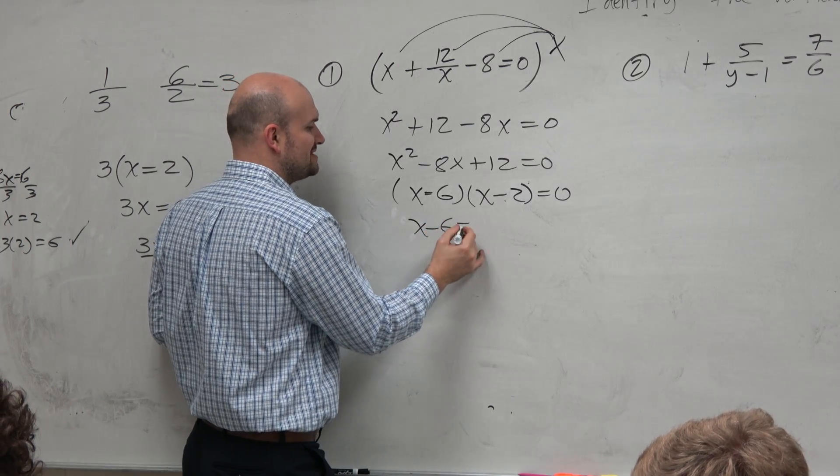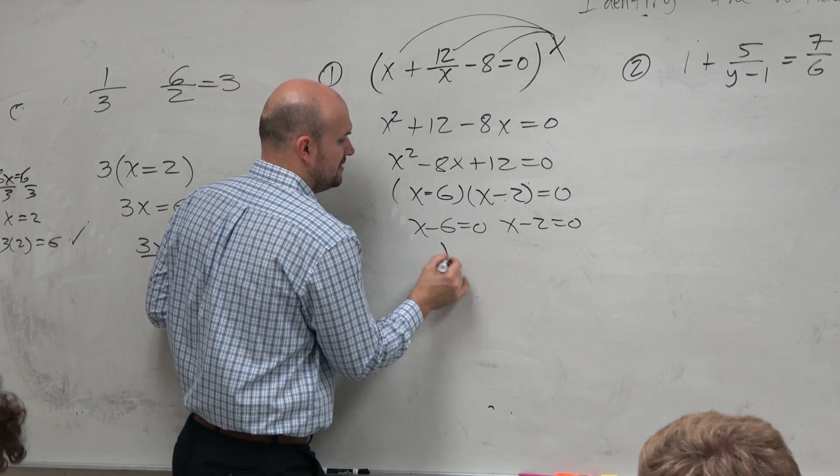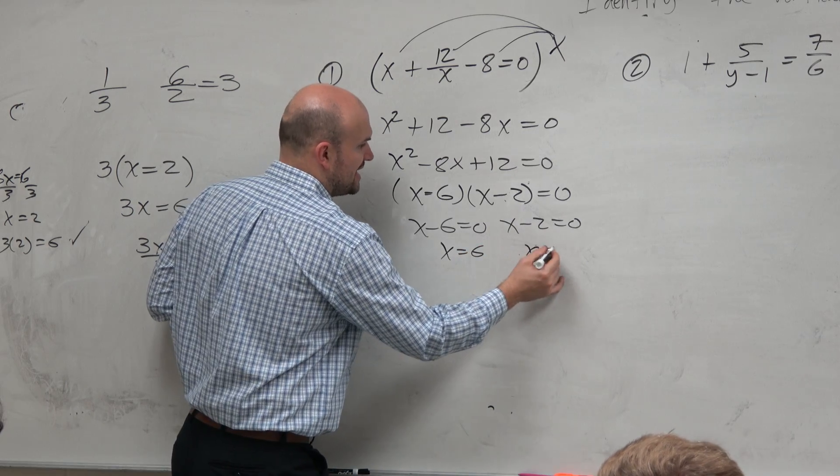So I have x minus 6 equals 0, and x minus 2 equals 0. Therefore, x is equal to 6, and x is equal to 2.